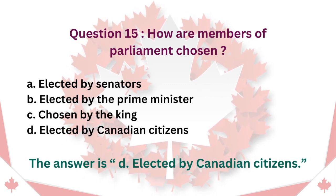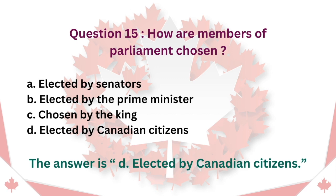Question 15: How are Members of Parliament chosen? A. Elected by Senators. B. Elected by the Prime Minister. C. Chosen by the King. D. Elected by Canadian Citizens. The answer is D. Elected by Canadian Citizens.